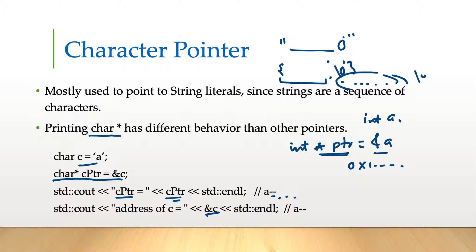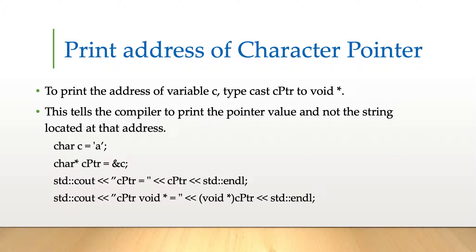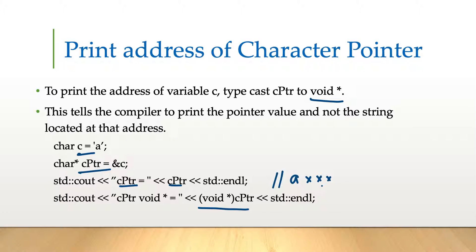So how can we print the address of a character pointer? In order to print that, we have to typecast it to void*. In the example, instead of directly printing the char pointer, we cast it to void*. Without the cast it may print just 'a' or some random characters since there is no null terminator, but casting it to void* will print the actual address associated with that character.